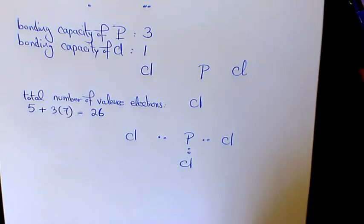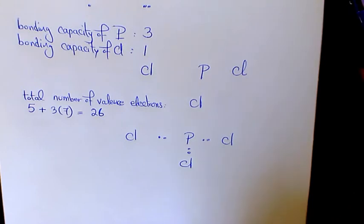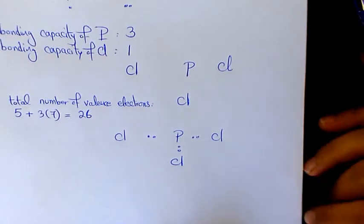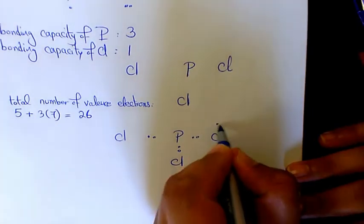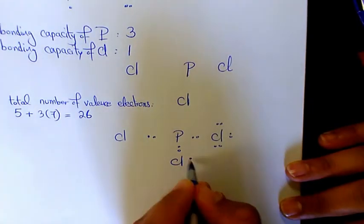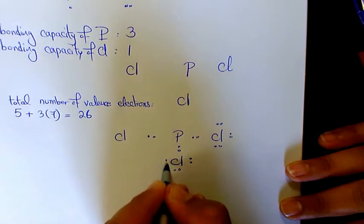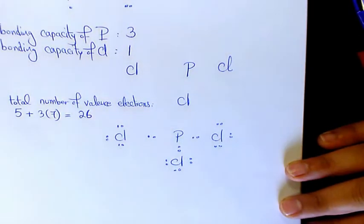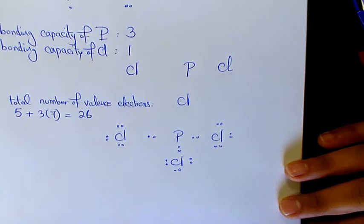Next, we need to place pairs of the remaining valence electrons as lone pairs on the surrounding atoms. So we put the lone pairs on the three chlorine atoms — one-two, one-two, one-two, one-two, one-two, one-two, one-two, one-two, one-two.